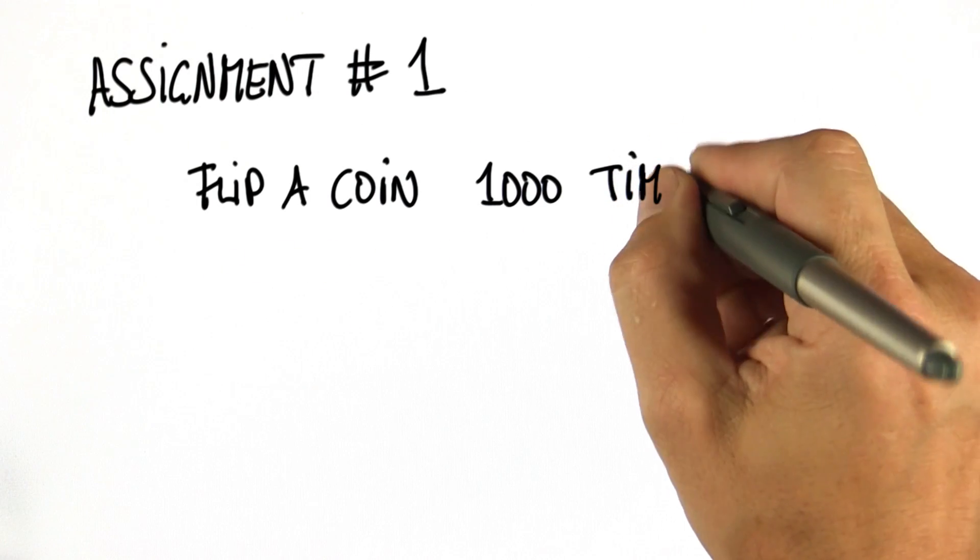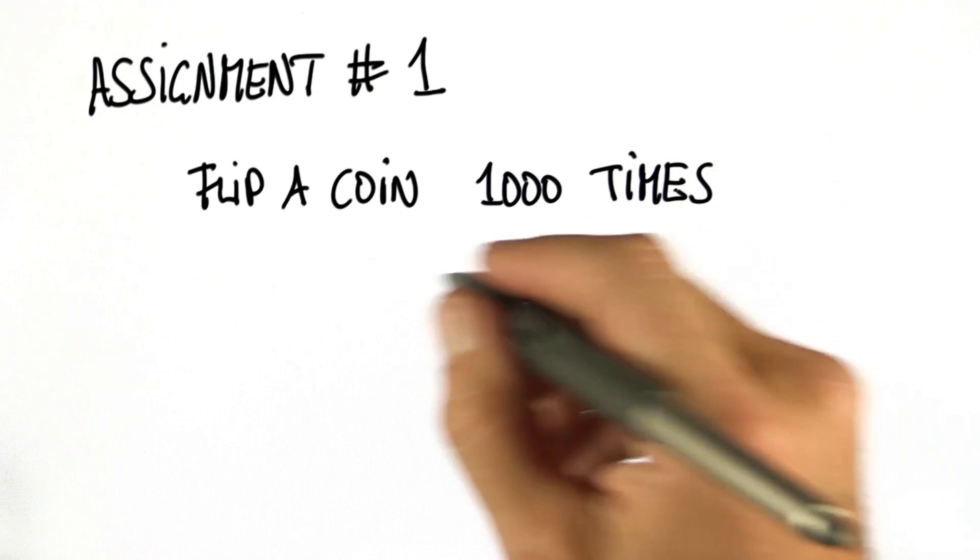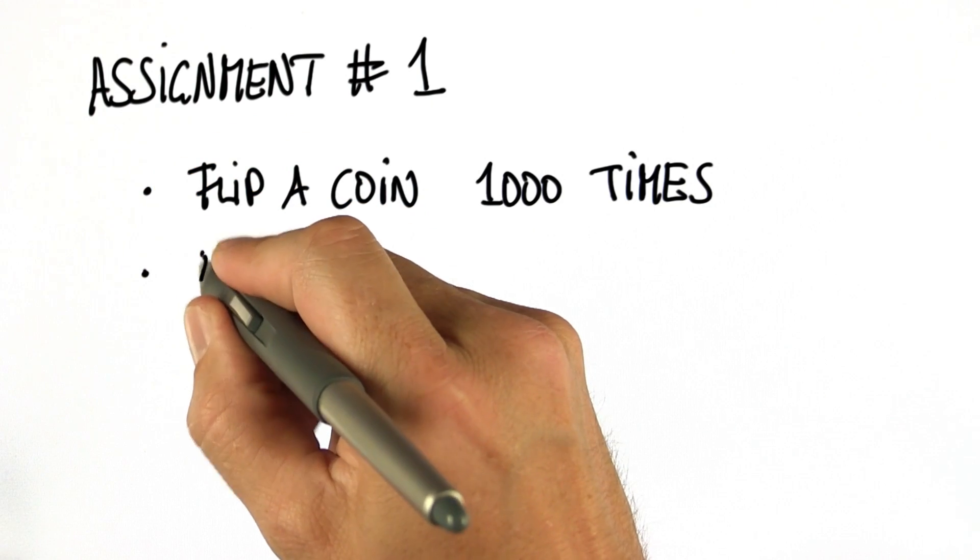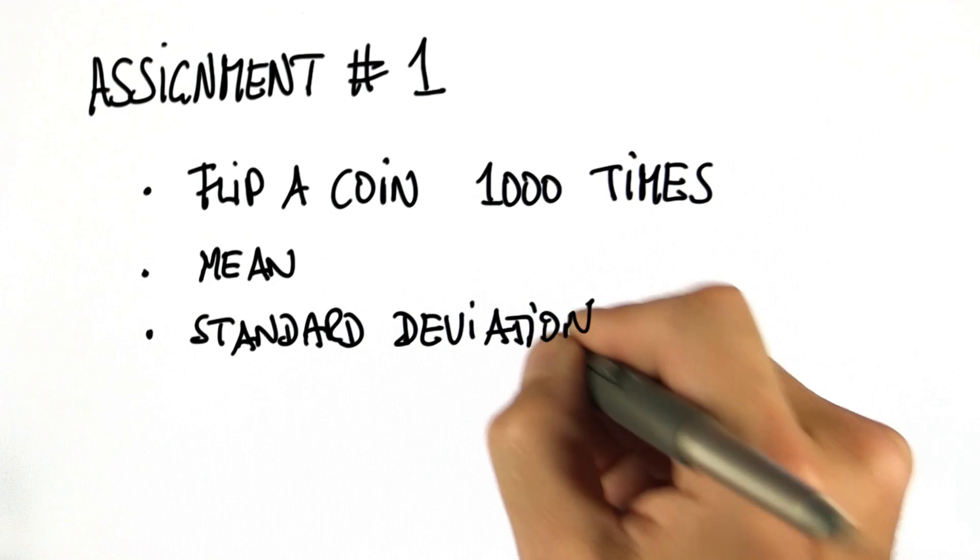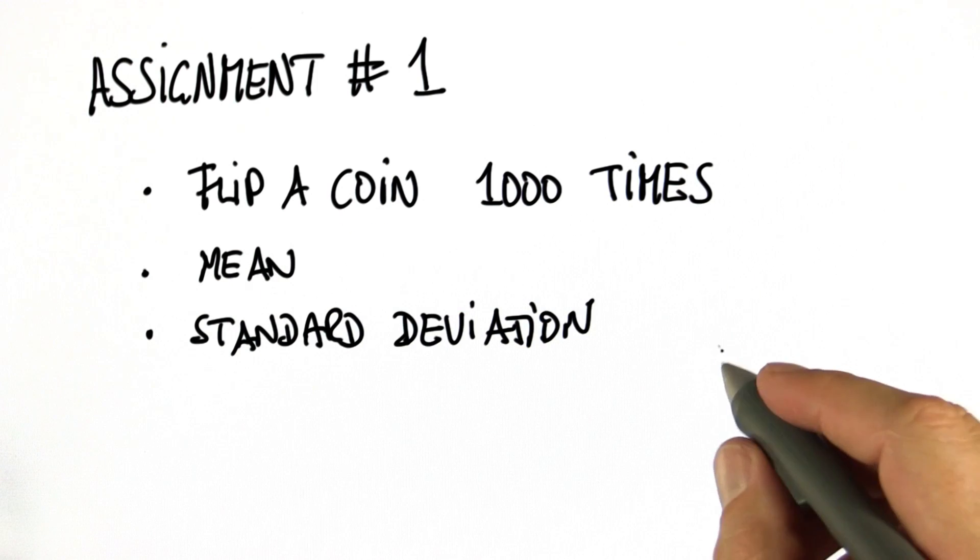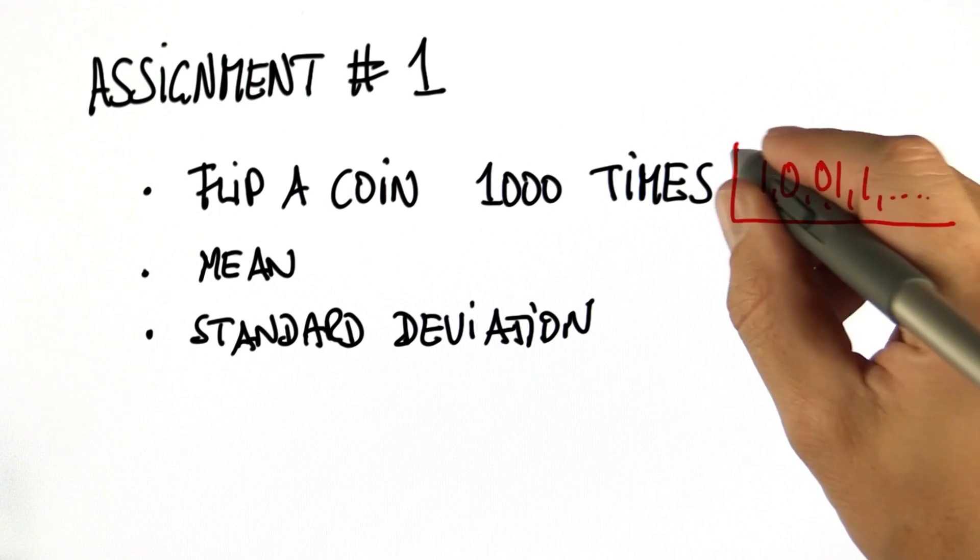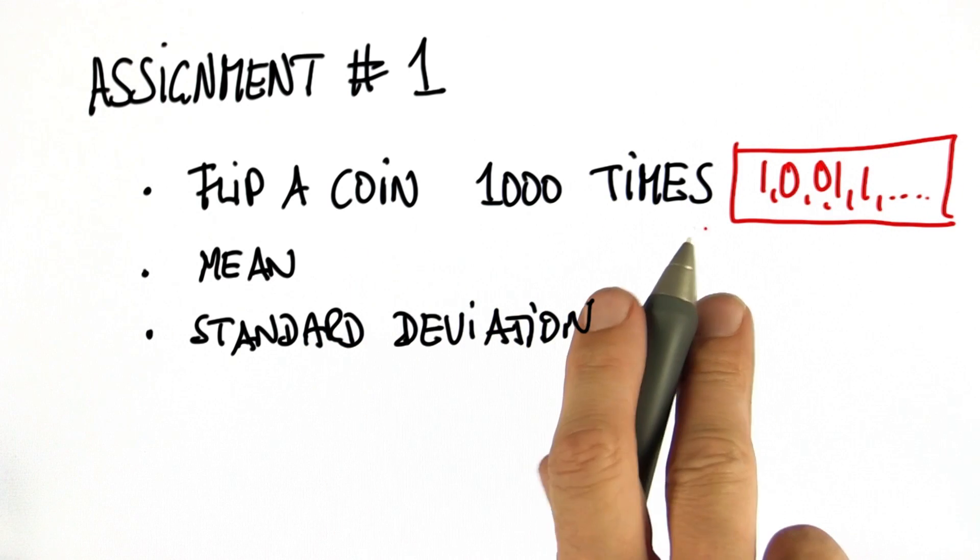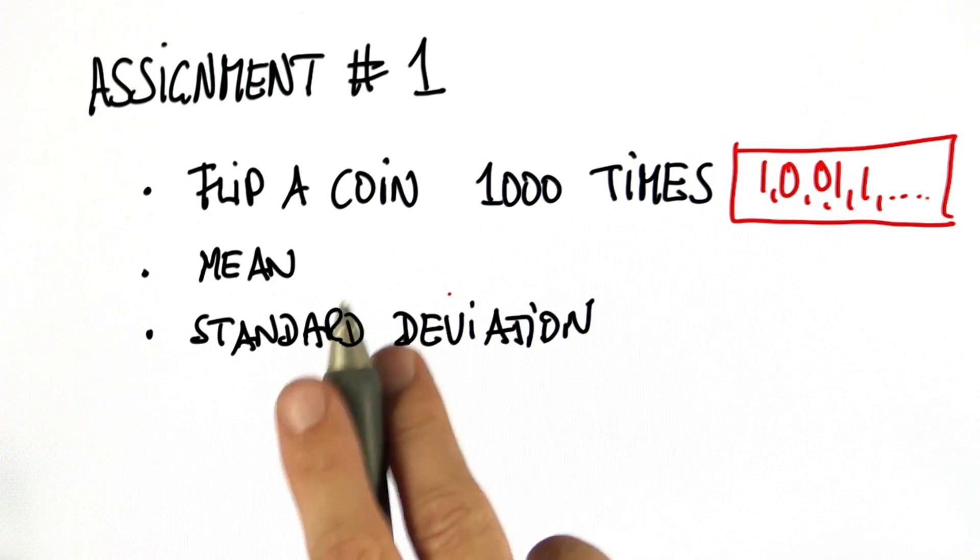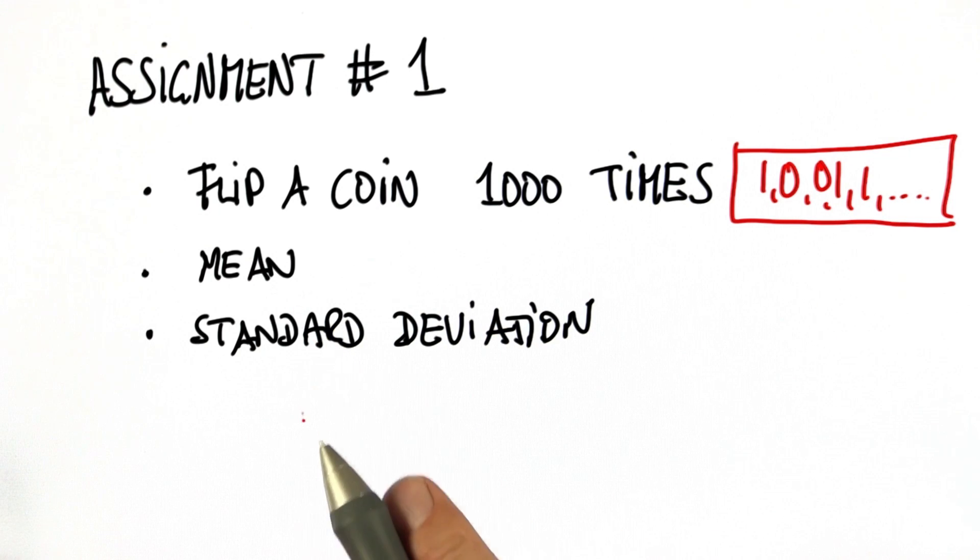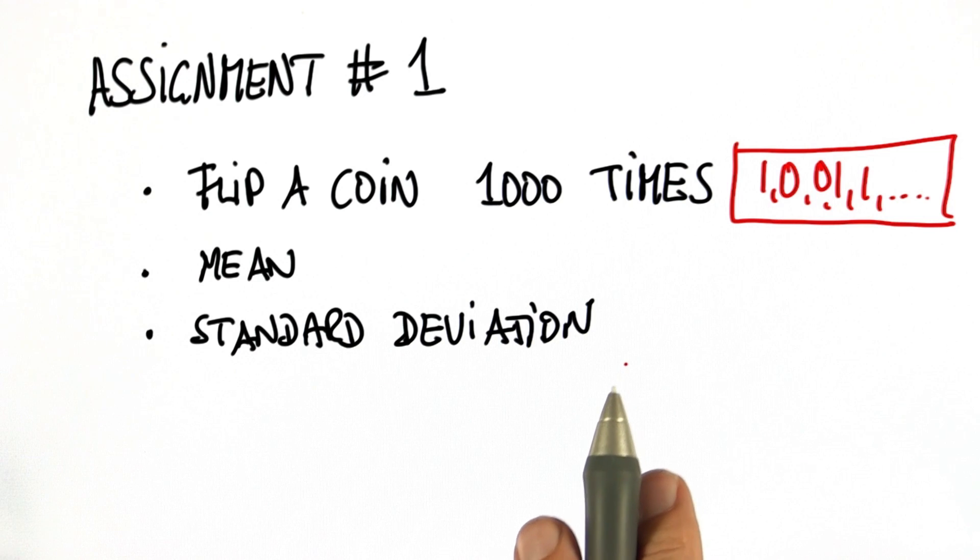So in assignment number one, I literally want you to flip a coin 1,000 times. And once you've done this, I want you to compute the mean of the outcome and the standard deviation. Flipping a coin is a random event. It gives us things like 0 or 1's as outcomes. If you drew that 1,000 times for a fair coin, you expect the outcome of the mean to be 0.5. You probably have no clue what to expect for the standard deviation.